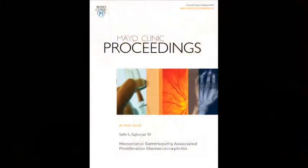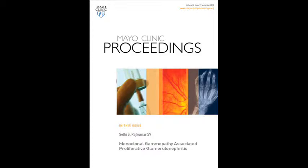I'm Sanjeev Sethi and I'm from the Department of Lab Medicine and Pathology at the Mayo Clinic. I'm here to discuss the manuscript on monoclonal gammopathy associated with proliferative glomerulonephritis. Proliferative glomerulonephritis results from deposition of immune complexes and complement, or complement alone. In the past, many of these cases were called idiopathic proliferative glomerulonephritis.